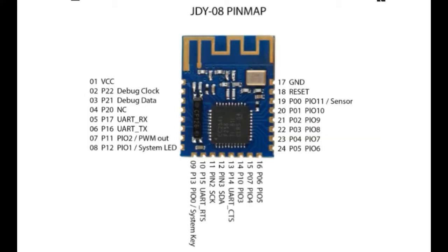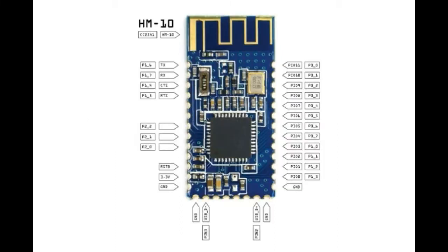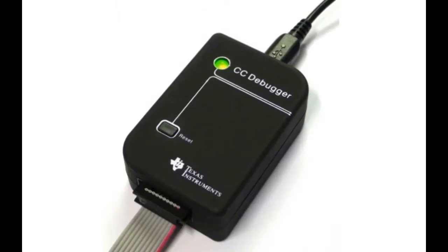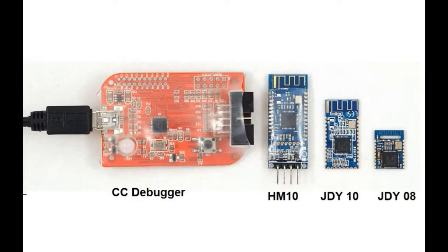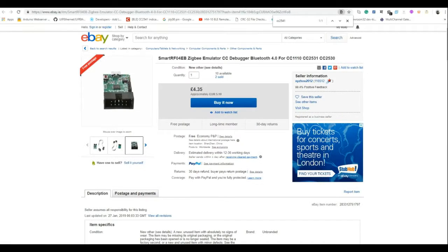The hardware required to start programming with CC2541 includes the JDY08 module, which you can program from the data and clock pin. Another module is the Hint module, which comes with firmware already flashed in it. For flashing and debugging, we require the CC Debugger. It's very hard to find this debugger in Indian electronics shops, so I ordered it from eBay.